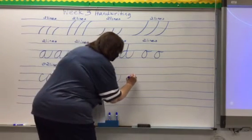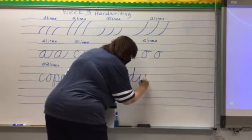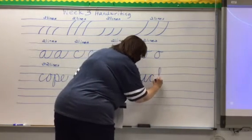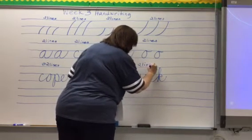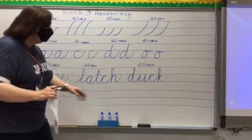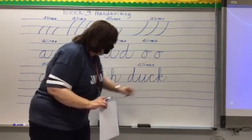D, U, C, K. And we're going to do two lines of that. Remember this is the U. It does not end at the middle line. This is your beginning stroke going into your C.